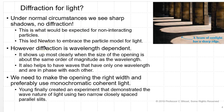Sharp shadows are what would be expected for non-interacting particles. This is what led Newton to embrace the particle model for light. But diffraction is wavelength-dependent. It shows up most clearly when the size of the opening is about the same order of magnitude as the wavelength. It also helps to have waves that only have one wavelength and are in phase with each other. We need to make the opening the right width — preferably use monochromatic coherent light.